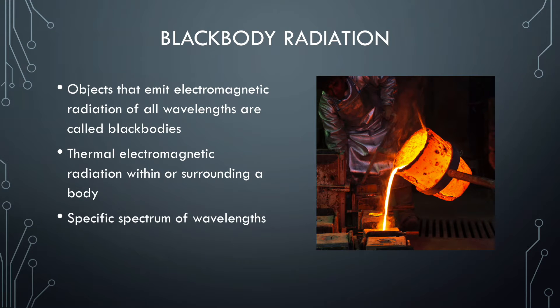Now we are going to move on to black body radiation. Certain objects are called black bodies because they emit electromagnetic radiation of all wavelengths. Black body radiation is thermoelectromagnetic radiation within or surrounding a body in thermodynamic equilibrium with its environment being emitted by a black body. Black body radiation has a specific spectrum of wavelengths that are inversely related to the intensity that depends only on the body's temperature, which is assumed to be uniform and constant.